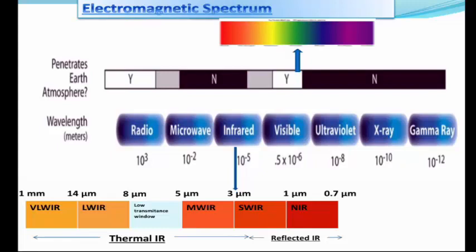Next to IR is microwave radiation. As you can see in the chart, some portion of the microwave radiation can penetrate into the earth's atmosphere. Next to microwave is radio waves, which can also penetrate into the earth's atmosphere. So we have four types of radiation which can penetrate into the earth's atmosphere: visible, infrared (some portion), microwave (some portion), and radio waves. Out of these, visible radiation, infrared radiation, and microwave radiation are mostly used in remote sensing.